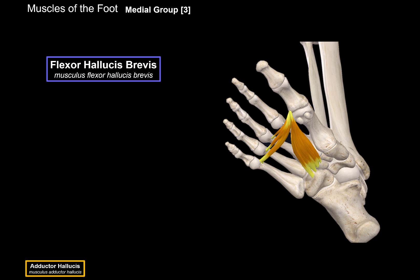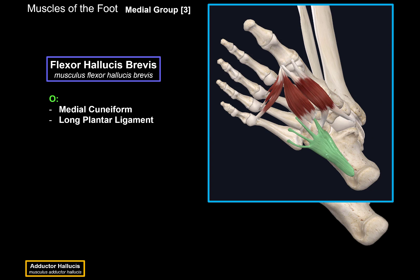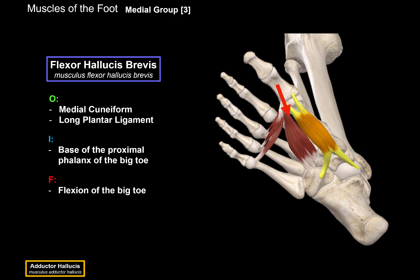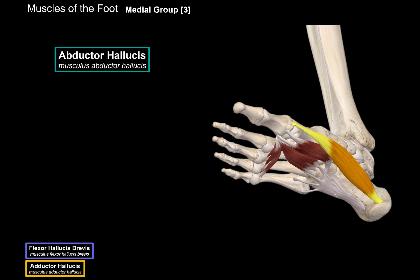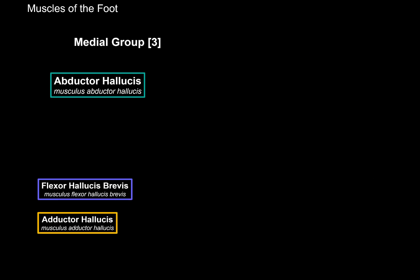Then we have the flexor hallucis brevis, which originates from the medial cuneiform as well as from the long plantar ligament — a long ligament connecting the calcaneus with the cuboid bone — and it inserts at the base of the proximal phalanx of the big toe. Its function is flexion of the big toe. Then there's the abductor hallucis, which originates from the calcaneal tuberosity and inserts at the base of the proximal phalanx of the big toe. Its function, as its name says, is abduction as well as flexion of the toe. That's the medial group.